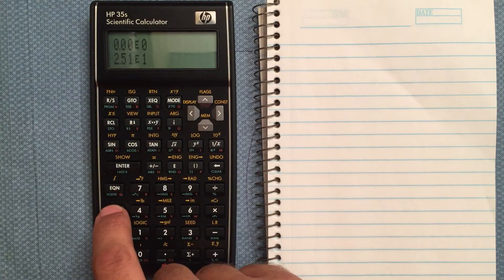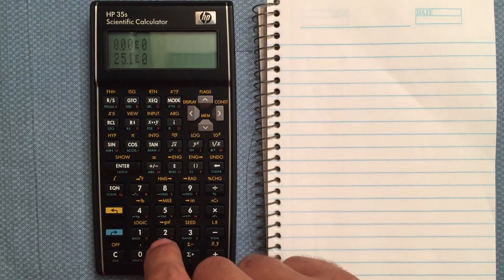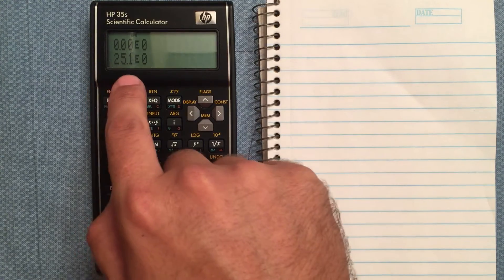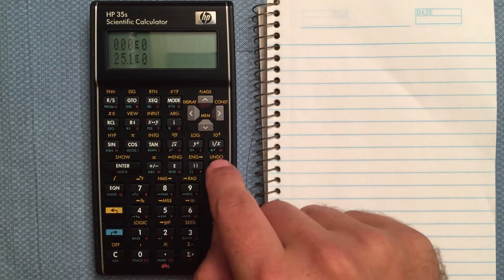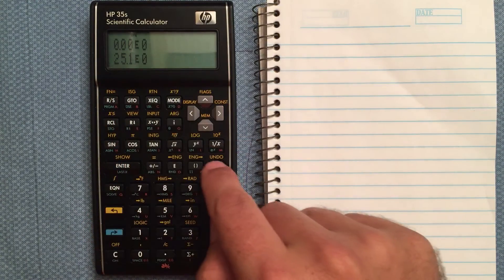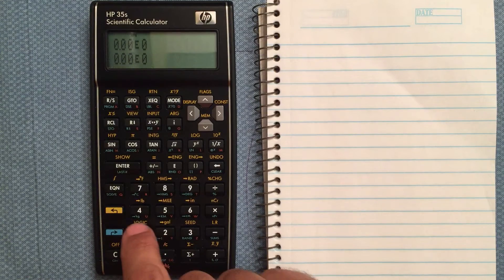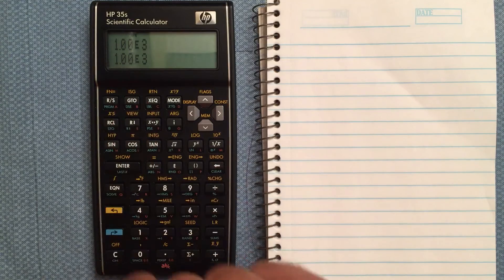Engineering mode is the mode that I commonly use. Again, I'll do two decimal places there. 25.1 times 10 to the 0. Now, the thing about engineering mode is it does multiples of 3. So if I go 1 kilometer, 1e3, it'll show 1e3.